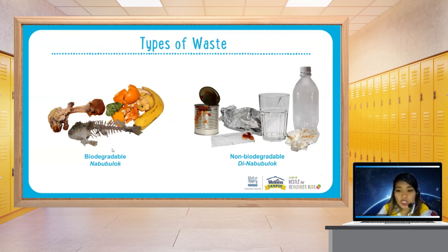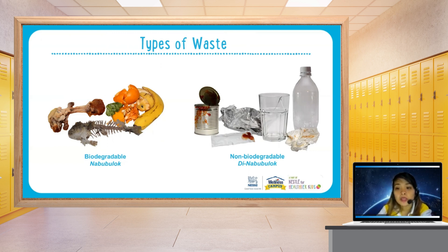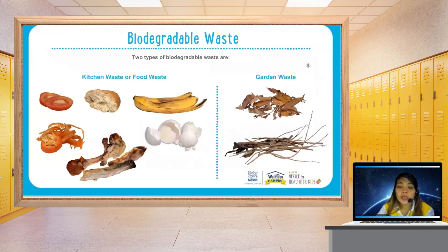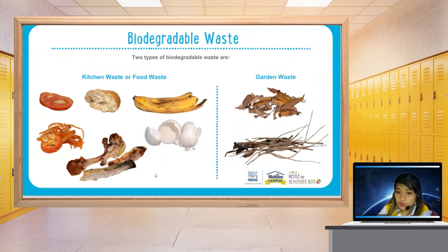Examples of biodegradable waste include fish, chicken bones, banana peelings, and tomatoes. Non-biodegradable waste includes cans, wrappers, bottles, and plastic bottles. There are two types of biodegradable waste: kitchen waste or food waste, like the examples mentioned, and garden waste.